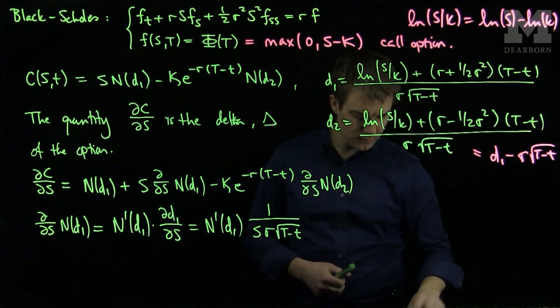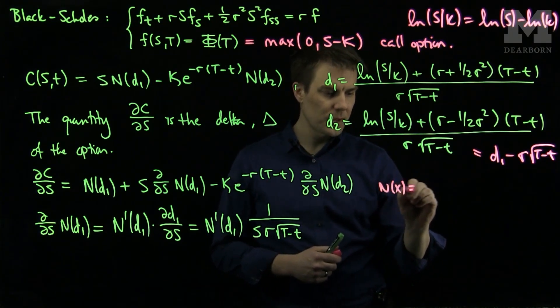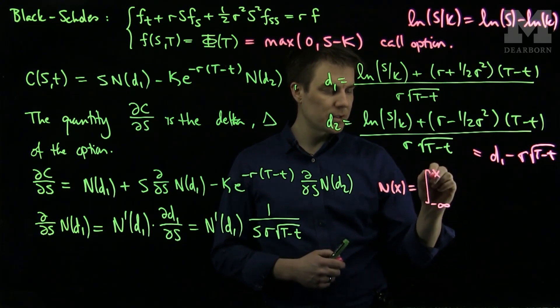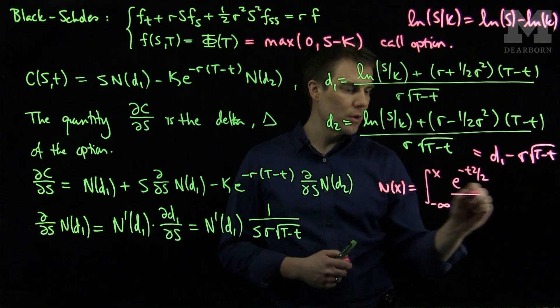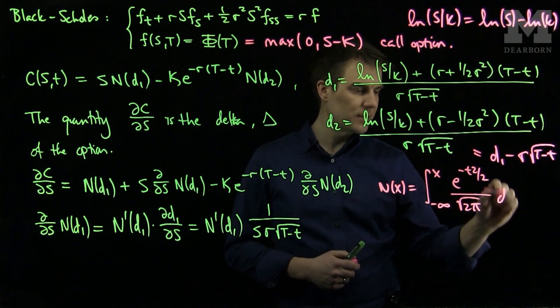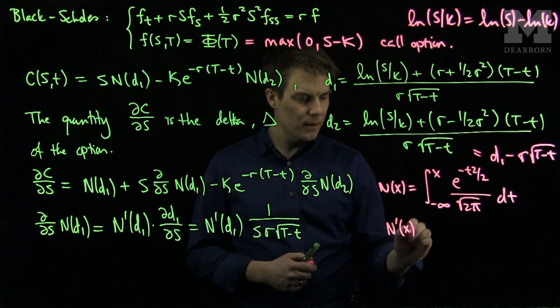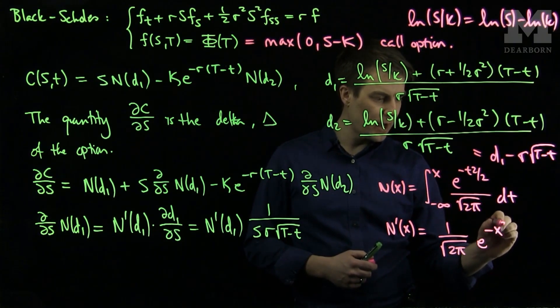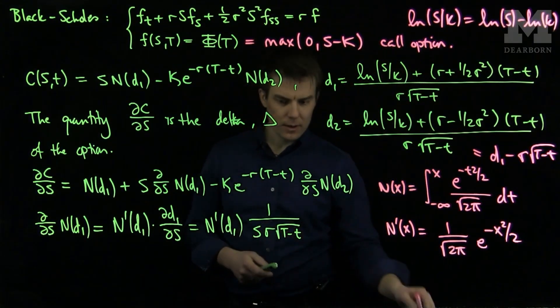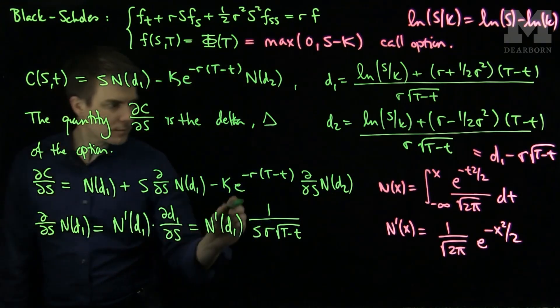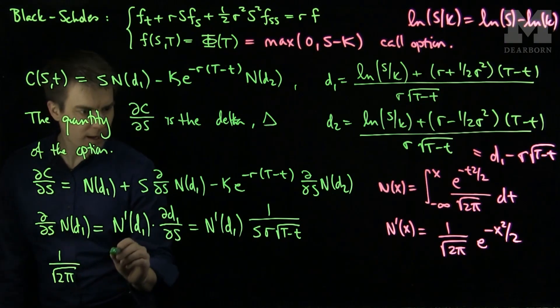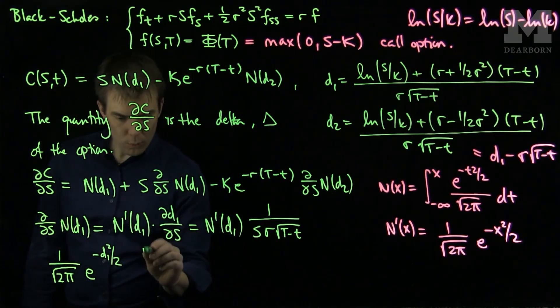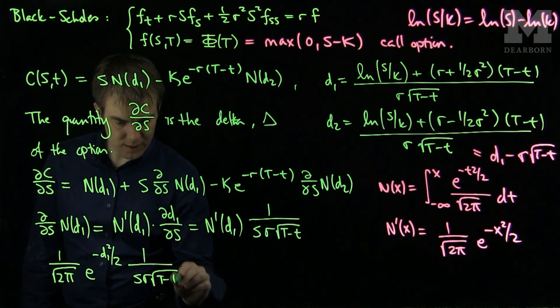Recall that N(X), the CDF of a normal random variable with mean 0 and variance 1, is the integral from negative infinity to X of e^(-t²/2) over sqrt(2π) dt. So N'(X) will be 1/sqrt(2π) e^(-X²/2). In particular, this will be 1/sqrt(2π) e^(-D1²/2) times 1/(S sigma sqrt(T-t)).